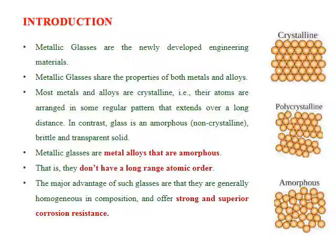In contrast, glass is amorphous in nature — non-crystalline, brittle, and a transparent solid that does not have long-range atomic order. Metallic glasses are metal alloys in amorphous form; these metals do not have long-range atomic order.